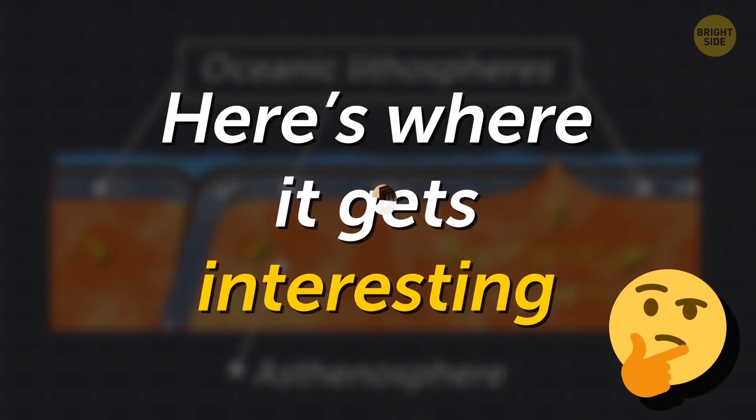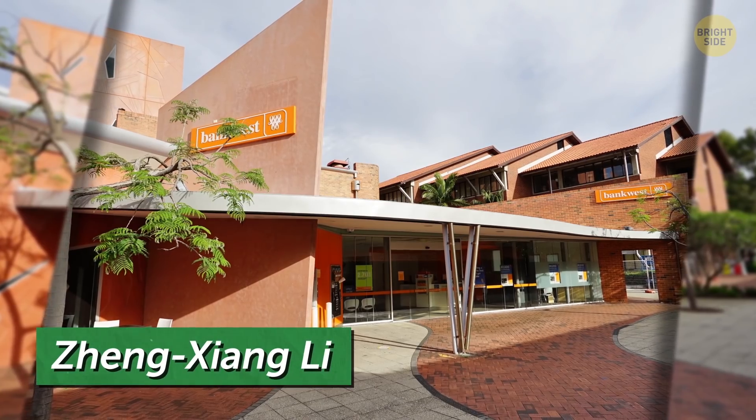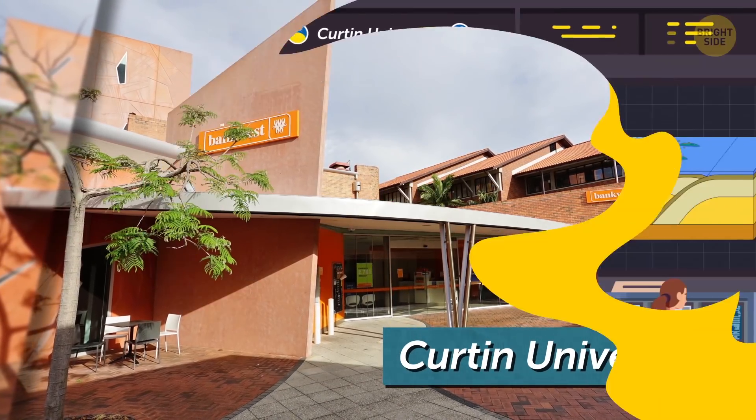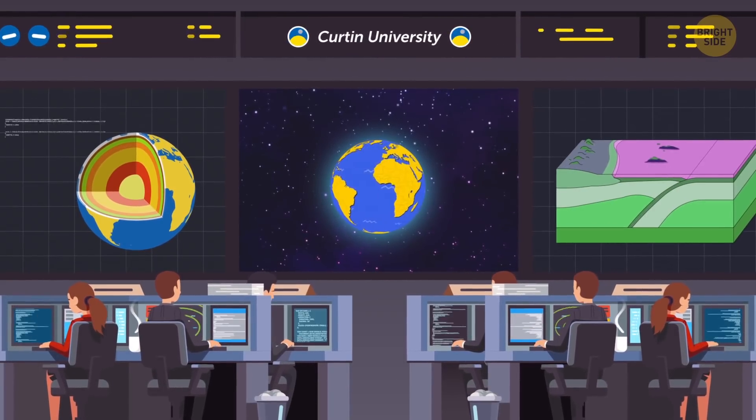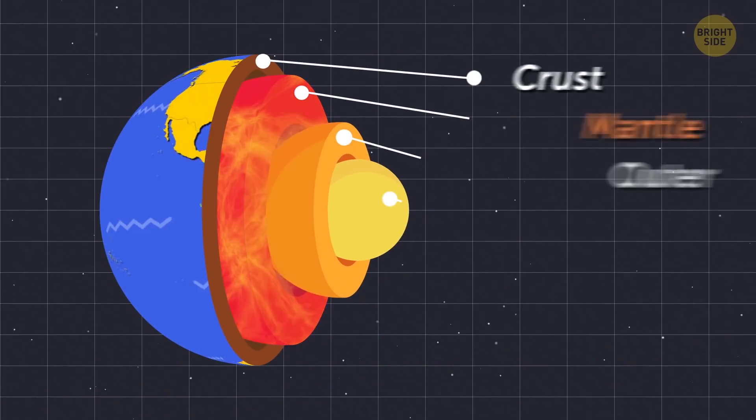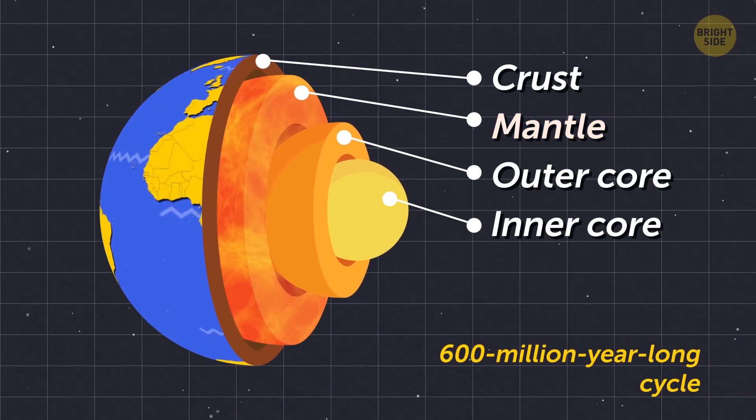So here's where it gets interesting. A study led by Xing-Shang Li from Curtin University in Australia found some unique patterns about the supercontinent cycle and the Earth's lithosphere. They found patterns in the mantle that match perfectly to a 600-million-year-old cycle.